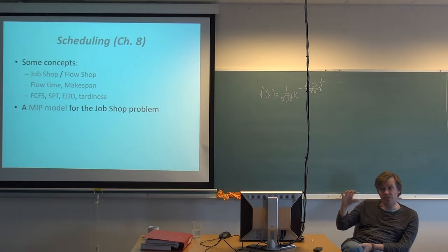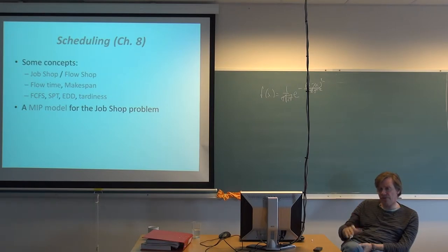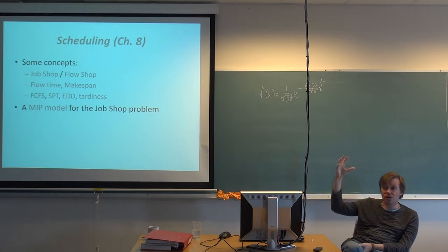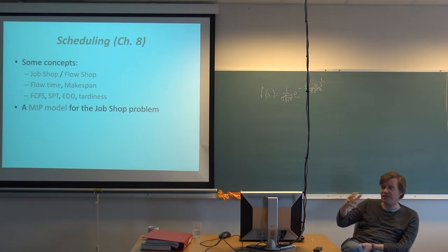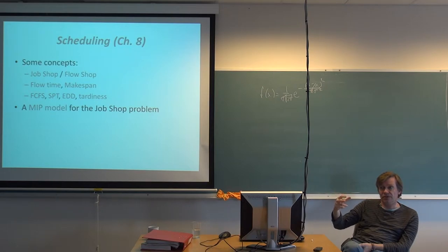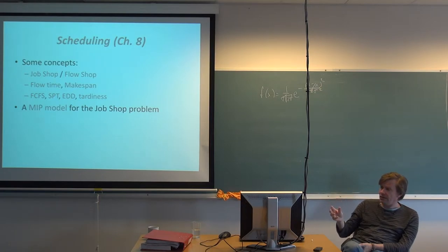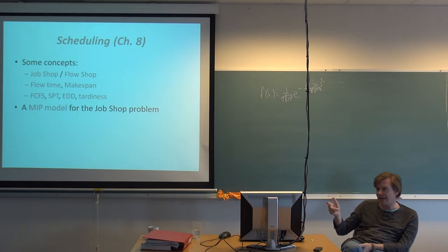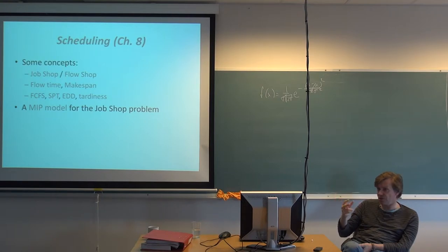Efficiency targets could be related to the time used in the process — trying to do things as fast as possible — which is perhaps the most normal target. But there could also be other objectives, such as due dates, meaning certain jobs must be finished at specific times. You can get tardiness — jobs being too late. So one of the things that differs here, both in logistics and event planning, is that the objective function we want to maximize or minimize is not as obvious as normal.